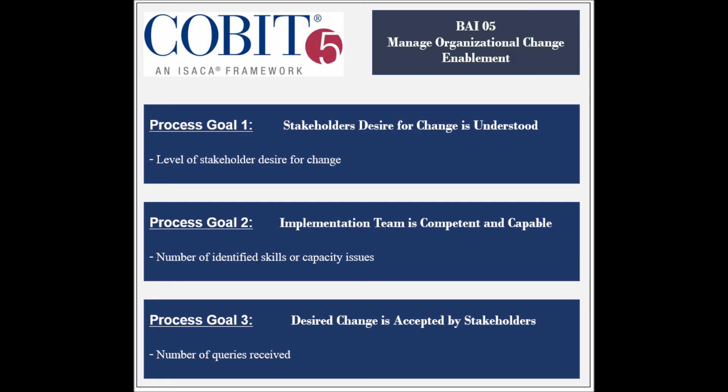The first process goal is to ensure that the stakeholders' desire to change is understood, and its achievement is measured by the level of the stakeholders' desire for the change. The second goal is to ensure that the implementation team is capable of driving the change, and its achievement is measured by the number of skills or capacity issues.